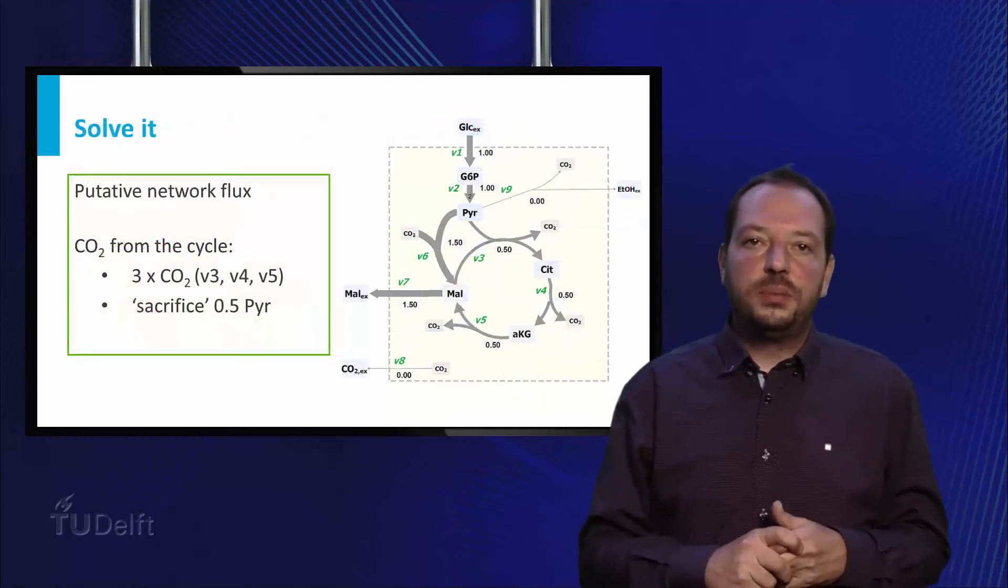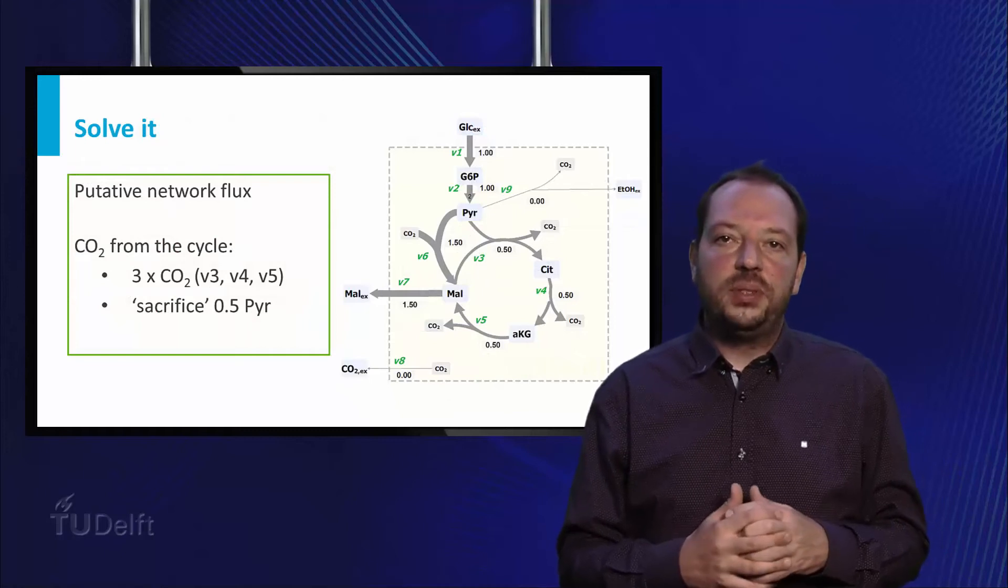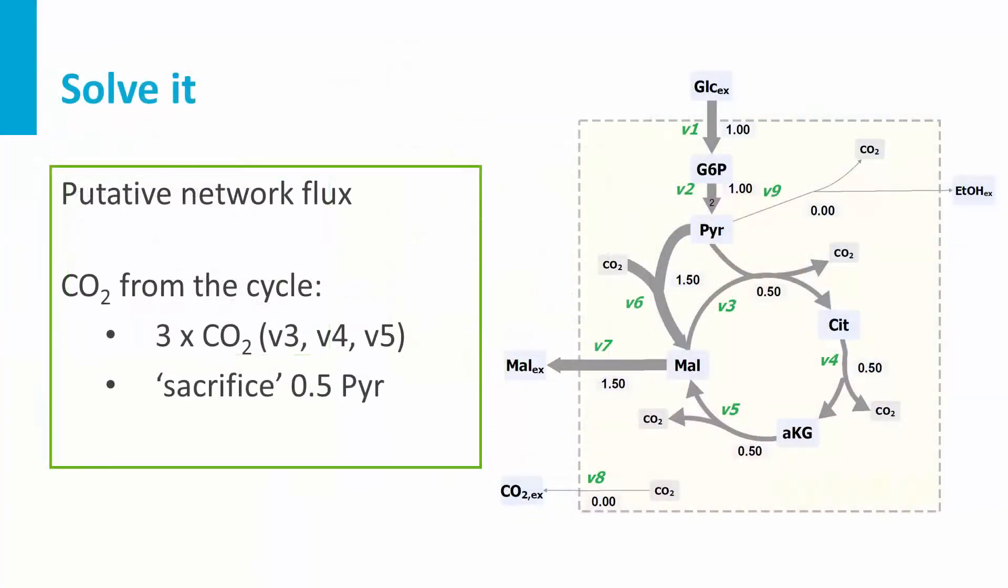Let's look into the first option and generate the flux map using this setup. One glucose enters the network generating two pyruvate. Here we will now split three to one between V6 and V3, leading to the production of 1.5 malate per glucose.